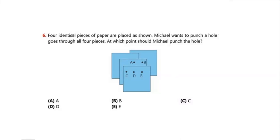Question 6: Four identical pieces of paper are placed as shown. 'Identical' means exactly equal. Michael wants to punch a hole that goes through all four pieces. At which point does Michael punch the hole? You have options A, B, C, and D. The condition is that the hole must pass through all four pieces of paper.